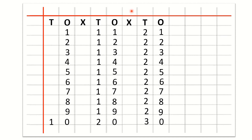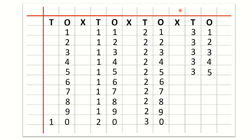Now children we will learn how to write 31 to 40 counting with the method of 10s and 1s. So, after O we will write a cross and we will not write anything under cross. After the cross we will write T for 10s and O for 1s. Now we will write: 3,1 — 31; 3,2 — 32; 3,3 — 33; 3,4 — 34; 3,5 — 35; 3,6 — 36; 3,7 — 37; 3,8 — 38; 3,9 — 39; 4,0 — 40.